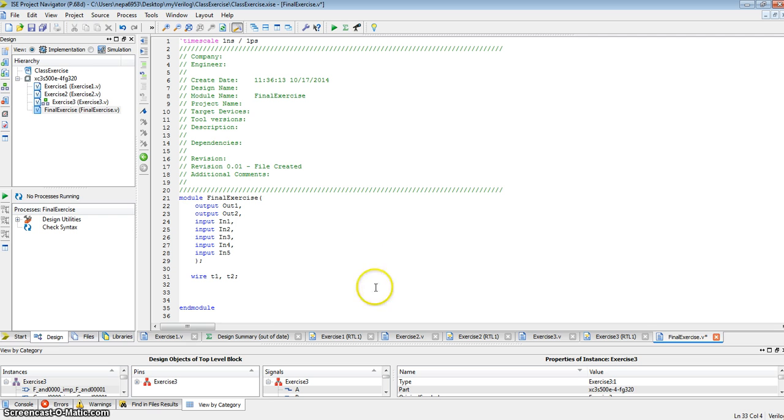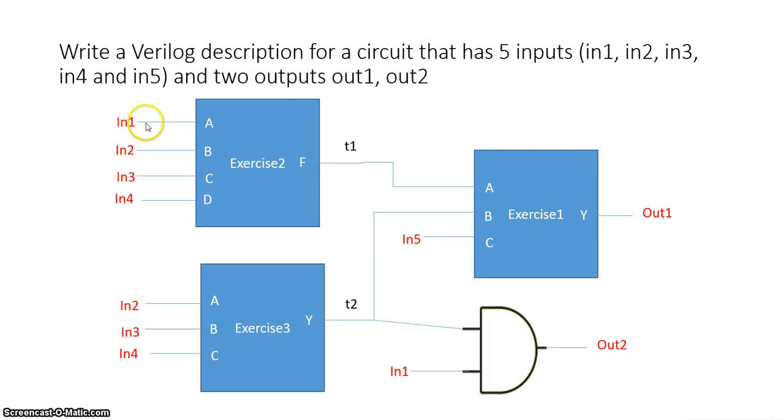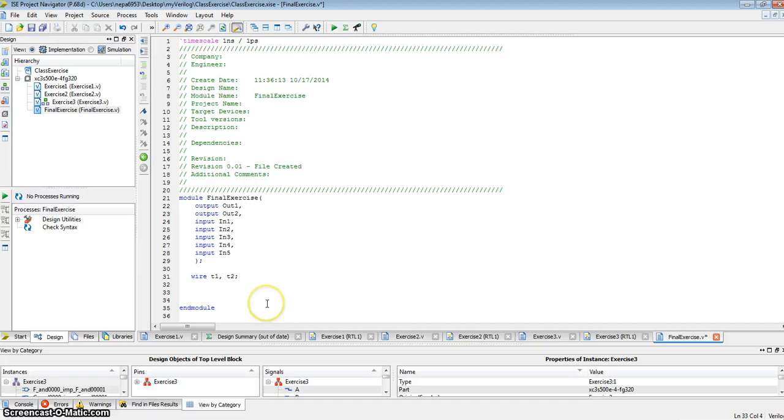So let's get started and describe exercise two. Now, in exercise two, in1, in2, in3, in4 are connected to the terms a, b, c, and d. And the output f is connected to t1. So let's describe that. So our module is called exercise two. That's what we created. When we created exercise two, let's go take a look. We describe the output first, and then the inputs.